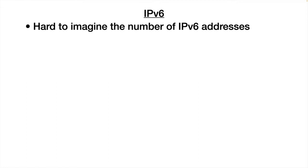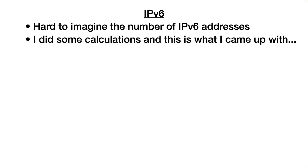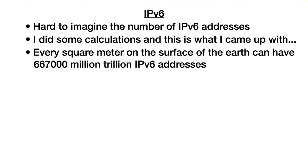A long time ago in CIT 161, I was trying to help students imagine how many IP addresses that was. I did some calculations looking at every square meter on the surface of the Earth, land or water. With IP version 6, every square meter on Earth can have 667,000 million trillion IP addresses — obviously way more than the atoms that would be in that square meter.